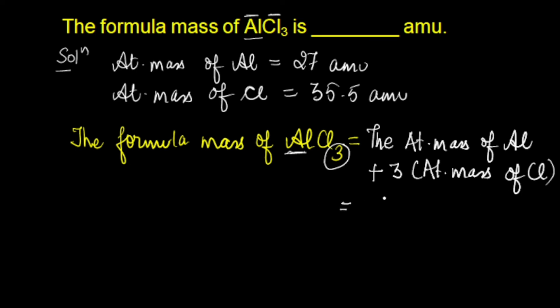The atomic mass of aluminium is 27 plus 3 times atomic mass of chlorine that is 35.5. Now adding these, 27 plus 106.5, that becomes equal to 133.5 amu.